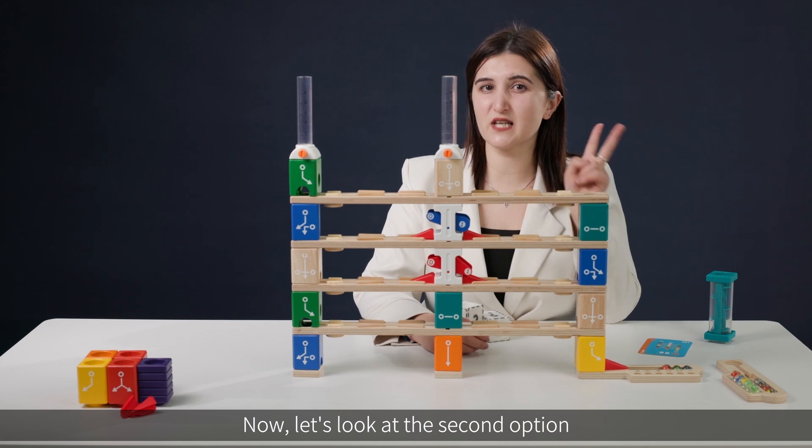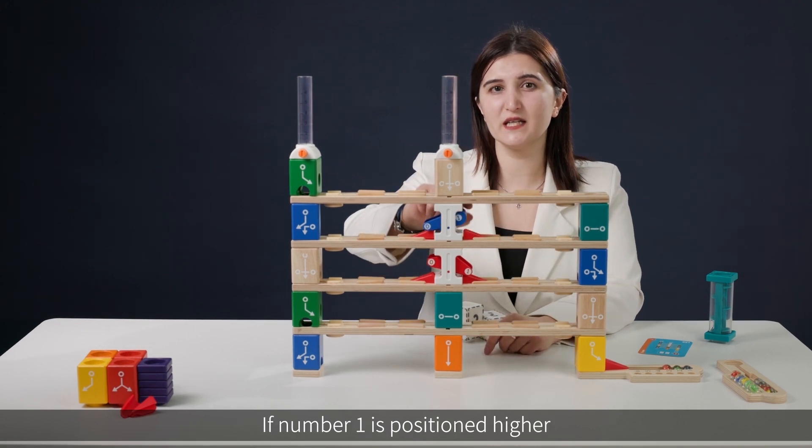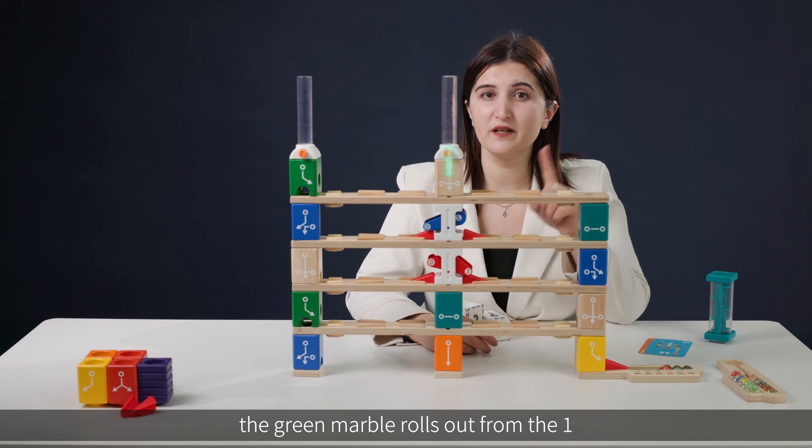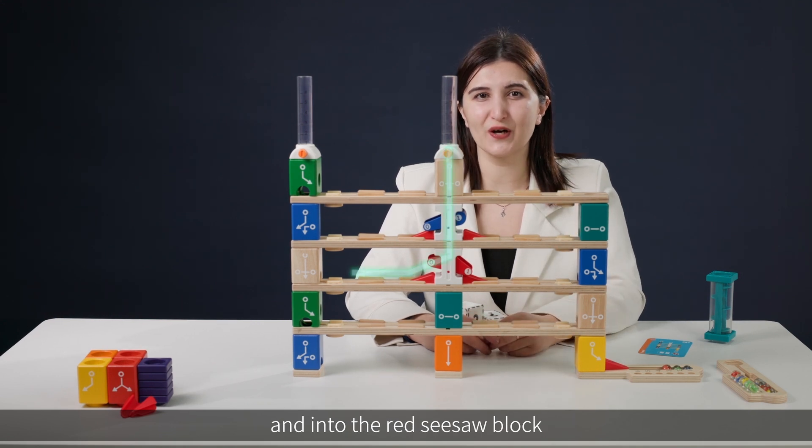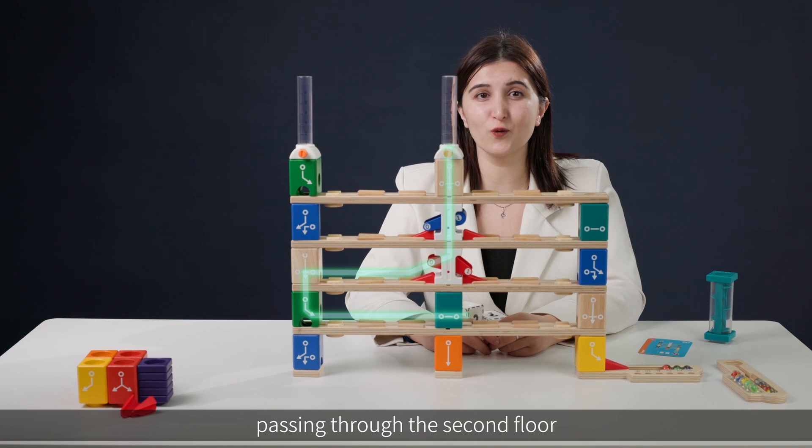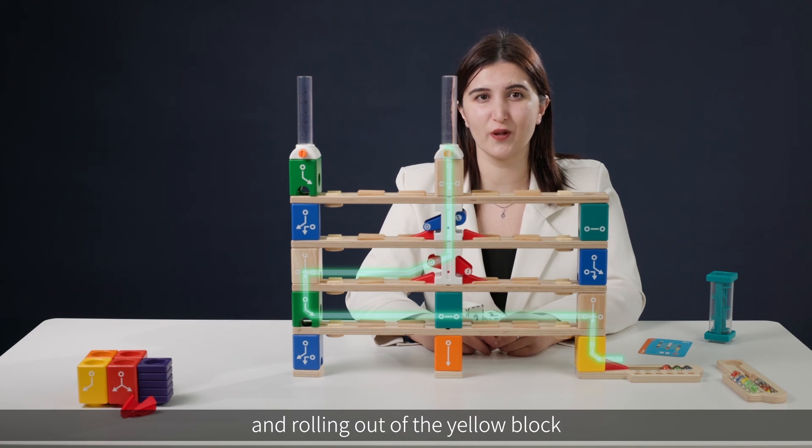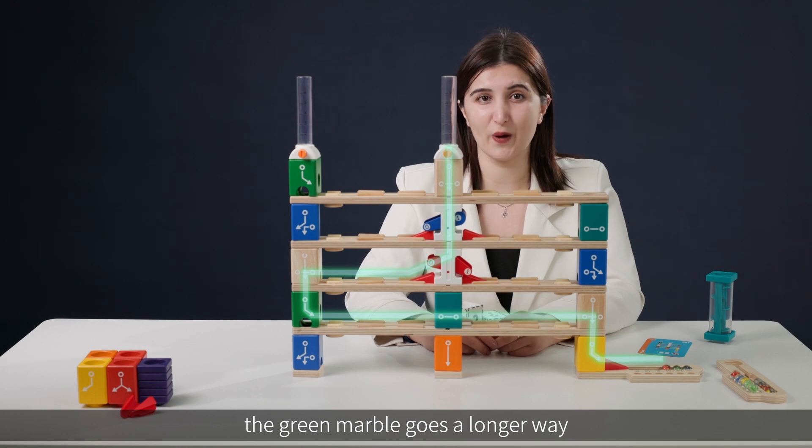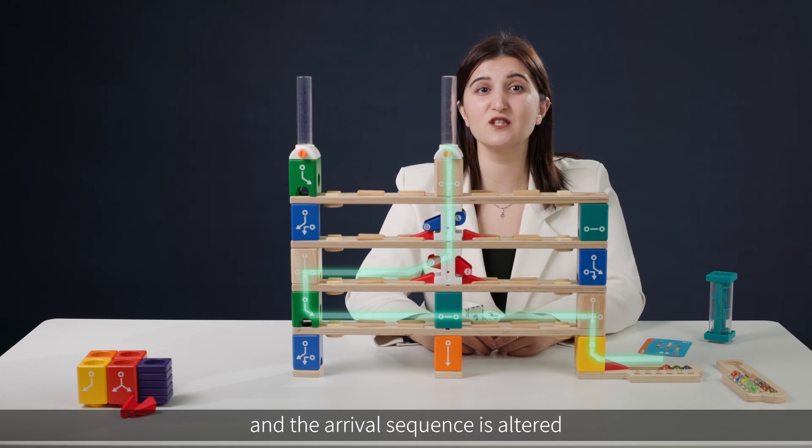Now, let's look at the second option. If number one is positioned higher, the green marble rolls out from the one and into the red seesaw block, passing through the second floor and rolling out of the yellow block. In this case, the green marble goes a longer way and the arrival sequence is altered.